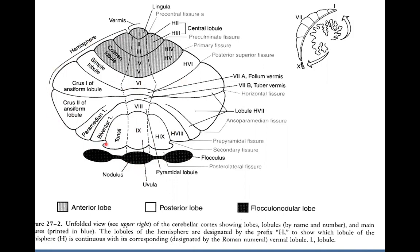Together, the cerebellum is divided into three lobes but ten lobuli. Lobuli are designated by Roman numerals, but when describing lobuli in extent of the hemisphere, you use the designation with H — for example, H4, H5, H6. If only a Roman numeral is written without H, it means we are describing the vermis of the cerebellum.